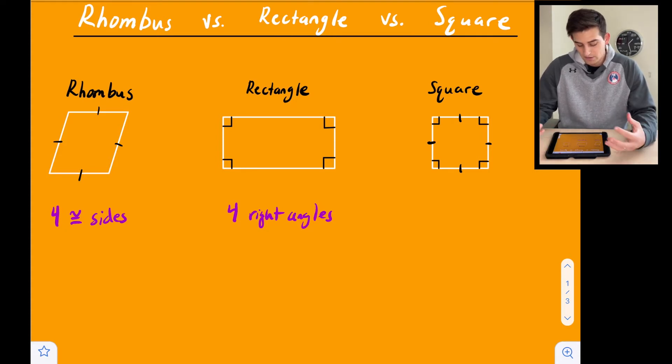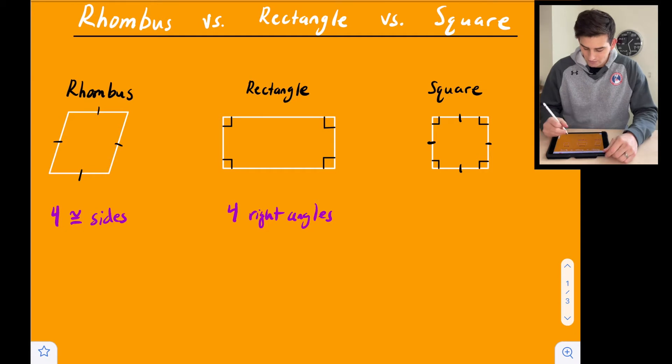So basically with a square, we take a rhombus and a rectangle and those characteristics of four congruent sides and four right angles, and we put them together. So a square has four congruent sides, and it also has four right angles.